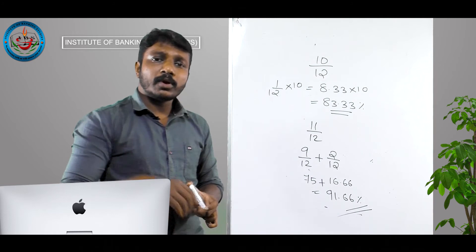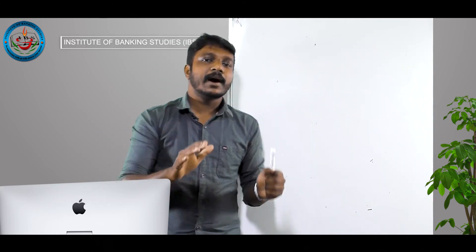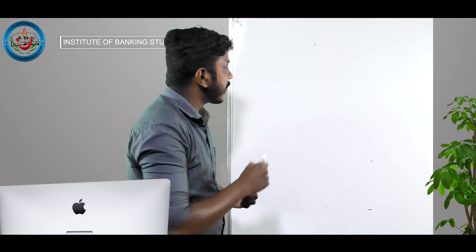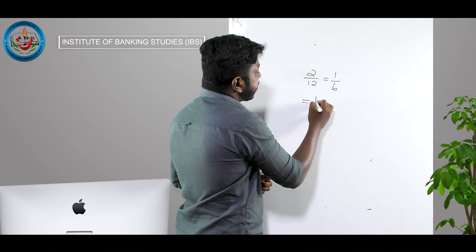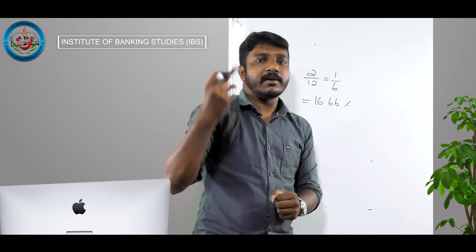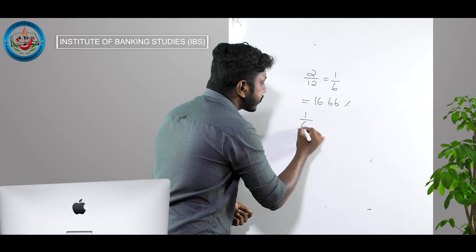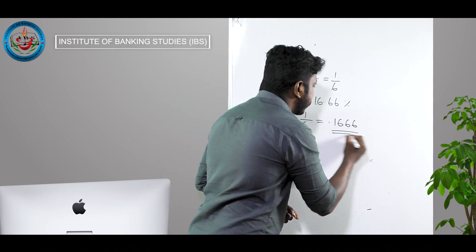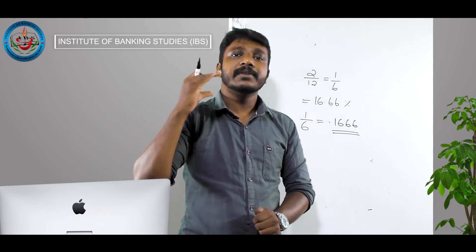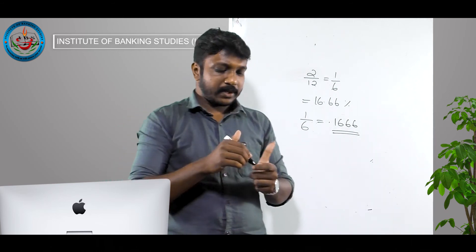12/12 is 100%. This is all about the percentage table of 12. One important thing to remember: all the values we discussed are percentage values. For example, 1/6 = 16.66% means we multiplied by 100 — the real value of 1/6 is 0.1666. We can apply these methods in simplification problems, which we'll discuss in upcoming videos. Thank you.